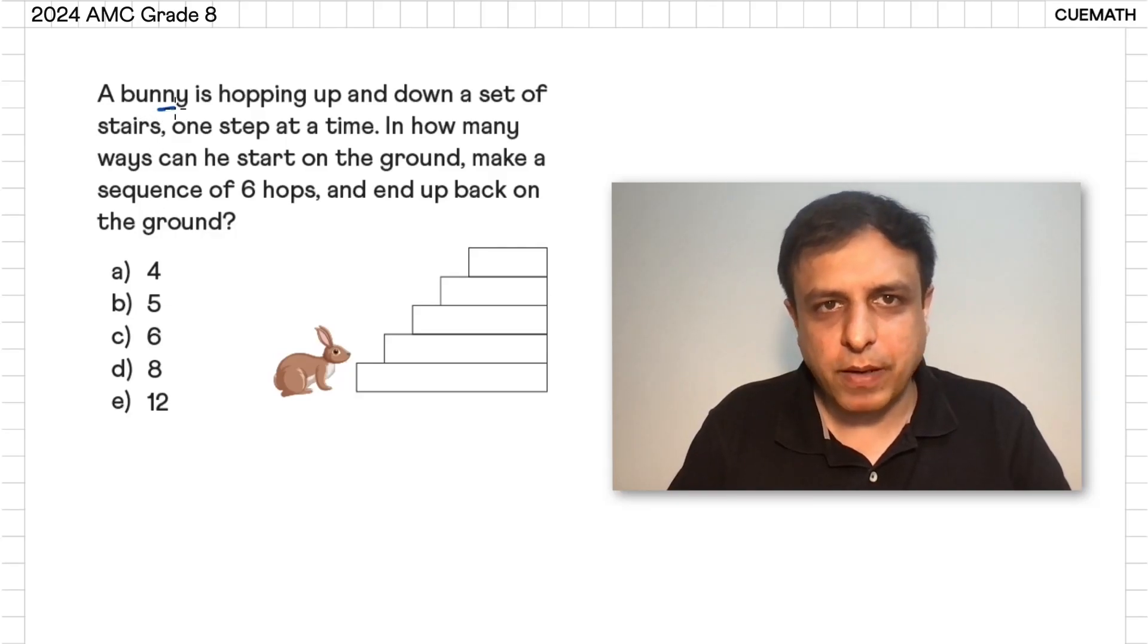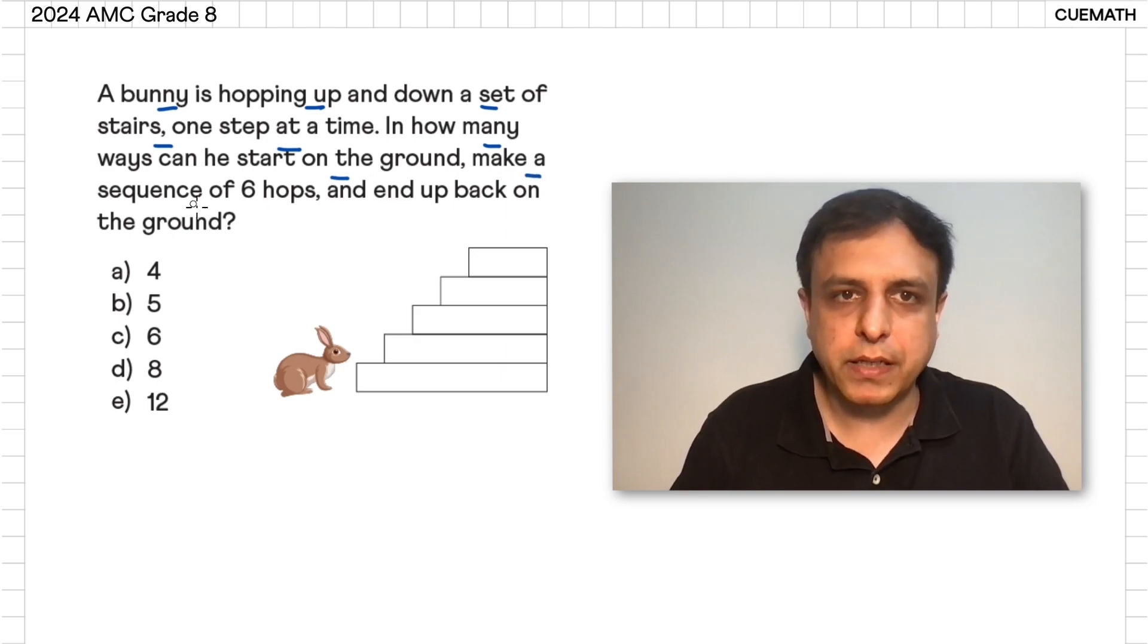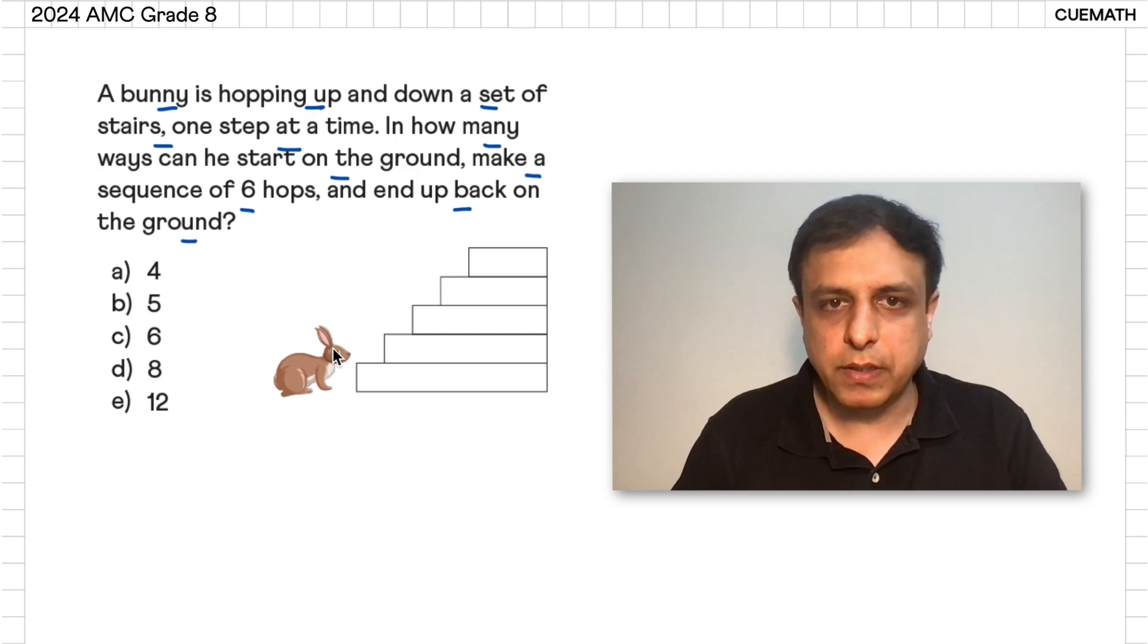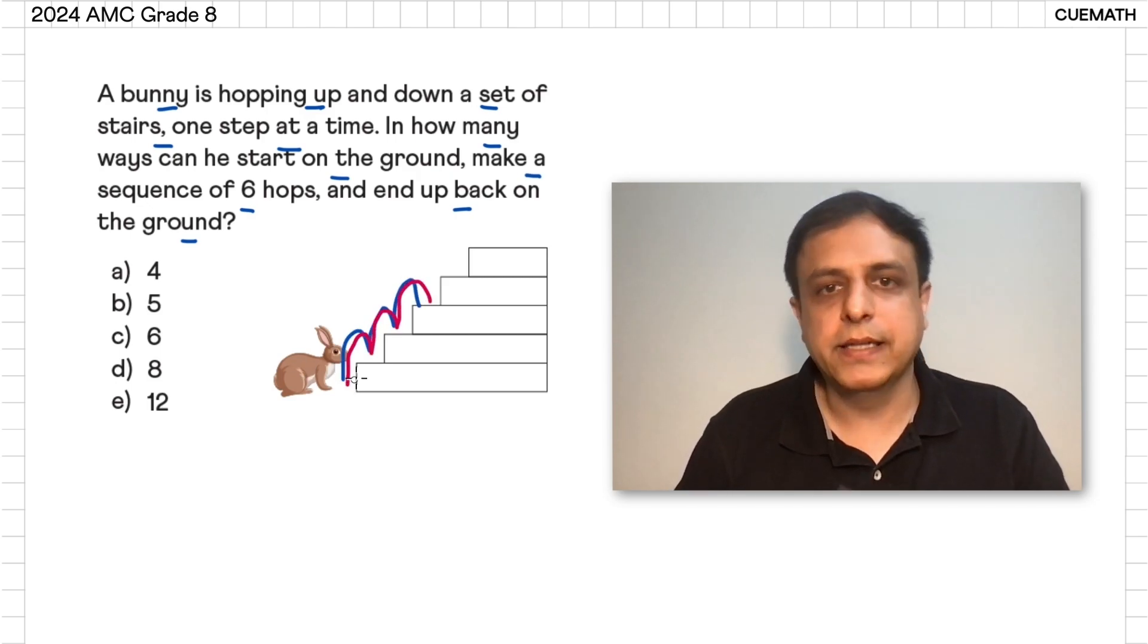This lovely AMC question says a bunny is hopping up and down a set of stairs, one step at a time. In how many ways can you start on the ground, make a sequence of six hops, and end up back on the ground?